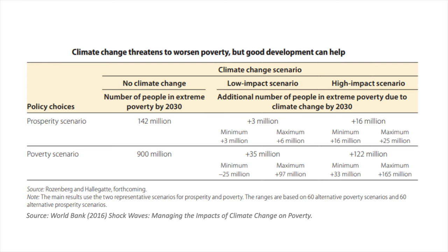We must also remind ourselves that poverty is not a static condition — it is constantly changing. For instance, it is estimated that by the year 2030, over 100 million people could fall back into extreme poverty due to climate change.